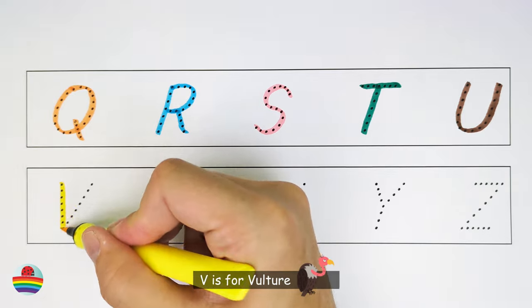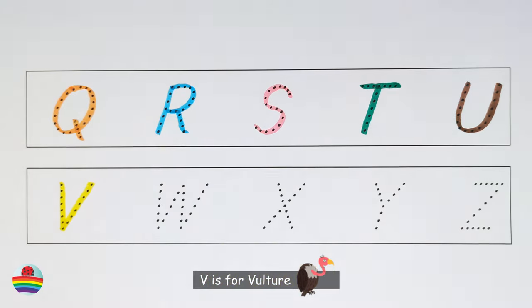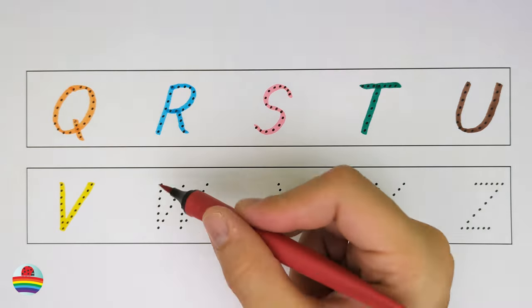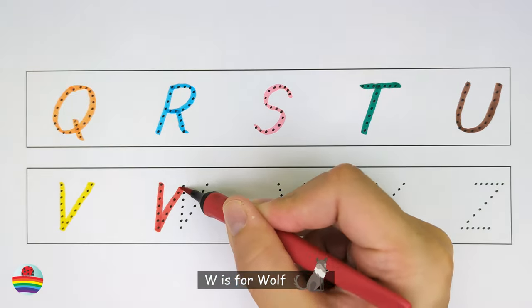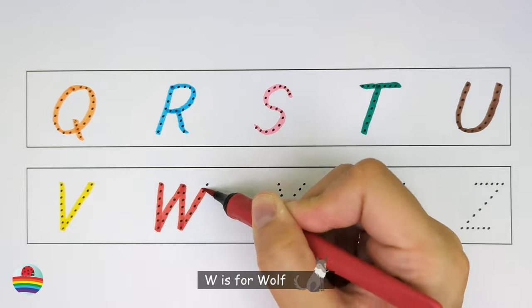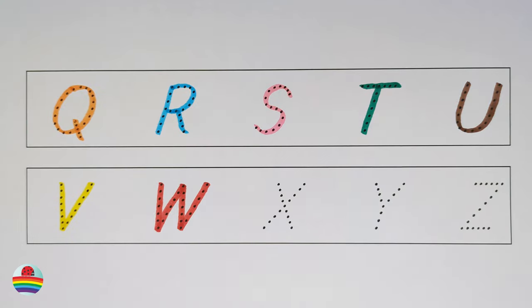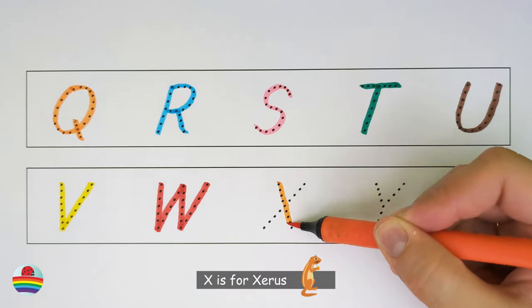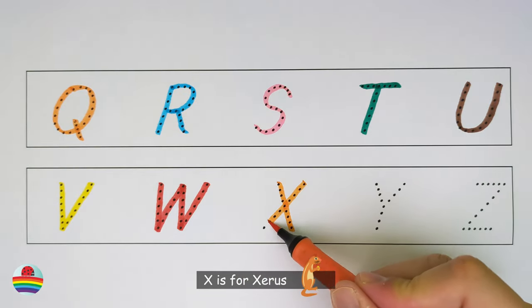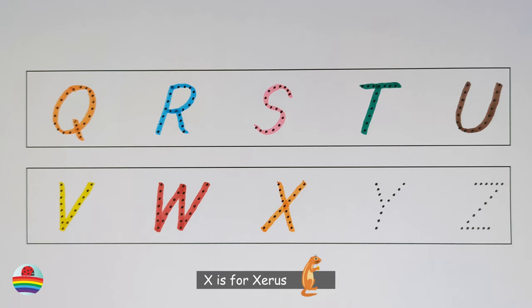V is for vulture. W is for wolf. X is for xerus.